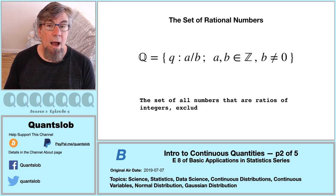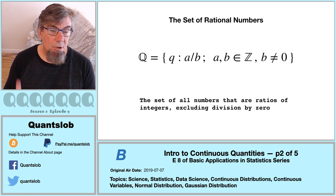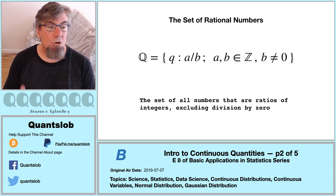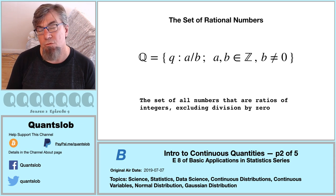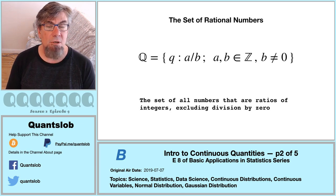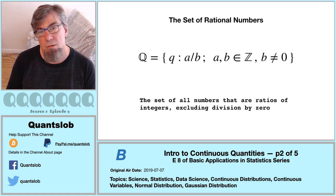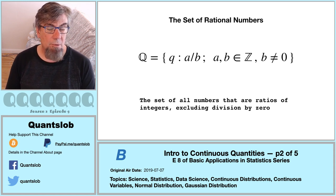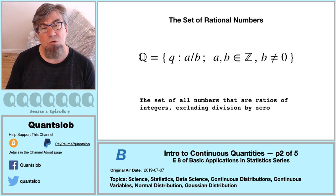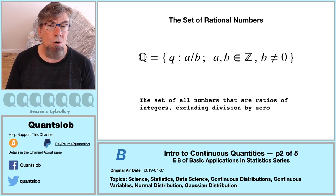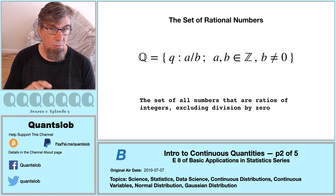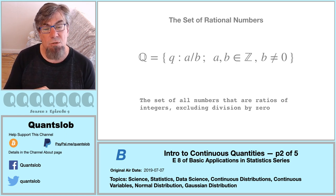The set of rational numbers is typically represented by capital Q — in blackboard bold typeface. Q comes from quotient, so named by the Italian mathematician Giuseppe Peano about a century ago. The set of rational numbers is made up of all numbers that can be expressed as a ratio of integers, excluding division by zero — so the denominator cannot be zero. To give us one perspective on infinity using the rational numbers, we're going to consider a property known as denseness.